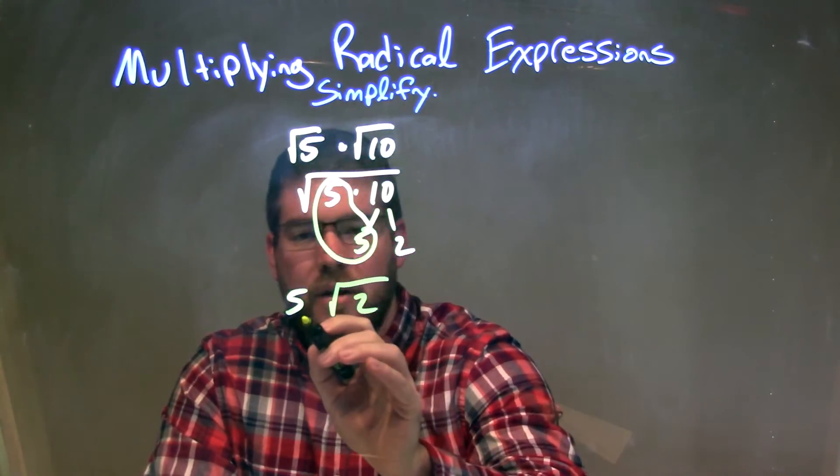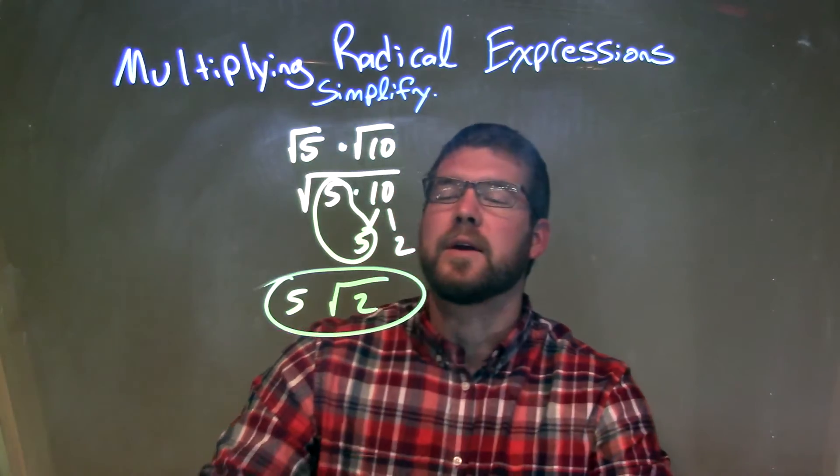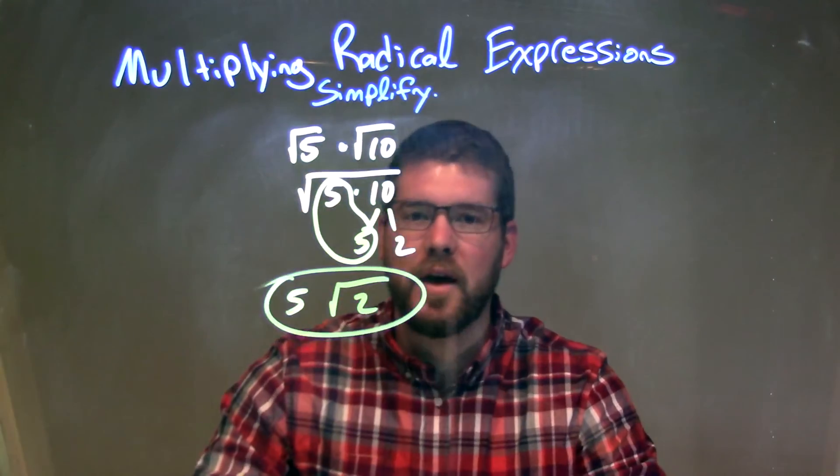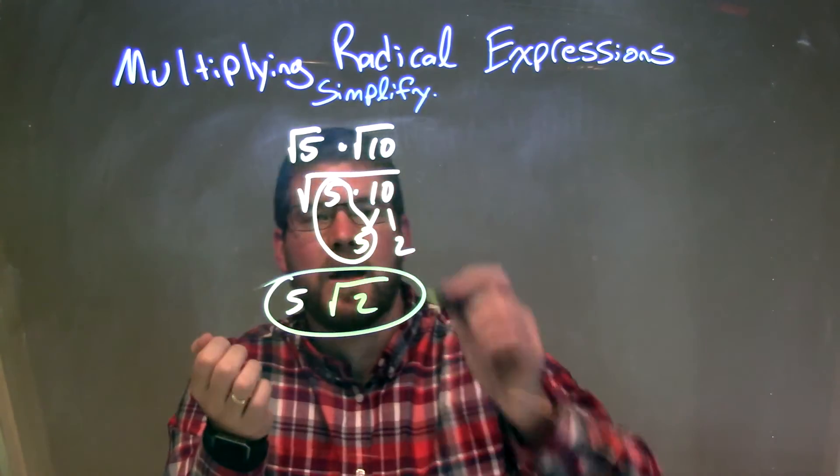We have our final answer here of 5 times the square root of 2. So let's recap. We're getting the square root of 5 times the square root of 10. Well, I can combine those into 1 square root to be square root of 5 times 10.